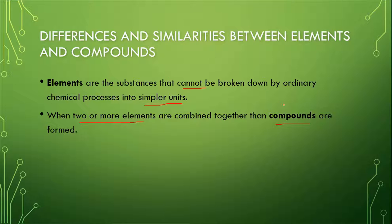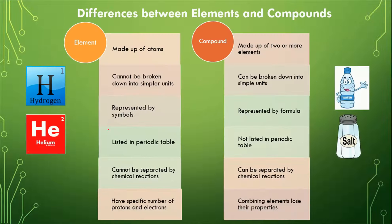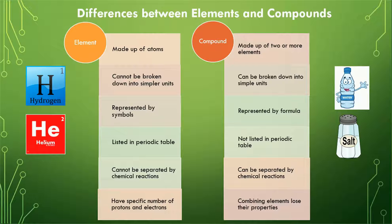Basically, elements are the base, and on the basis of these elements, different compounds are formed. For example, elements include hydrogen, helium, and all the elements present in the periodic table. In the case of compounds, we have water — made up of hydrogen and oxygen — and salt, which is made up of sodium and chloride.